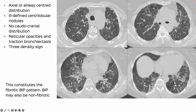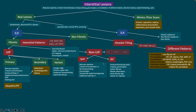If you look at this patient, we have the axial, or airway-centered, disease pattern. There are ill-defined centrilobular nodules, no real craniocaudal predominance. You have reticular opacities, traction bronchiectasis, and the three density sign — and this constitutes the fibrotic BIP pattern. BIP may also be non-fibrotic. Using the unified approach, in this case we say: yes, there are real lesions, it is an ILD, it is fibrotic, it is non-UIP, and it fits into the BIP pattern.